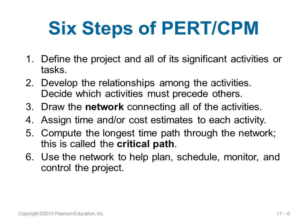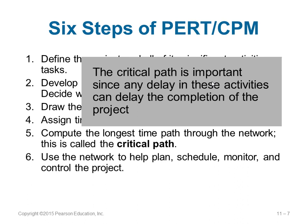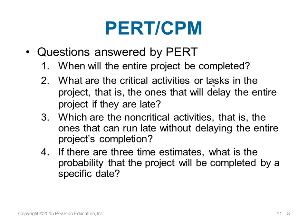There are six steps to do PERT/CPM. First, define the project and know the various activities. Second, know which activity must be completed before the next one starts. Third, draw a network connecting all activities. Fourth, assign time and cost estimates to each activity. The longest-time path through this network is called the critical path. Any delay in activities on the critical path will cause a delay in the completion of the entire project.